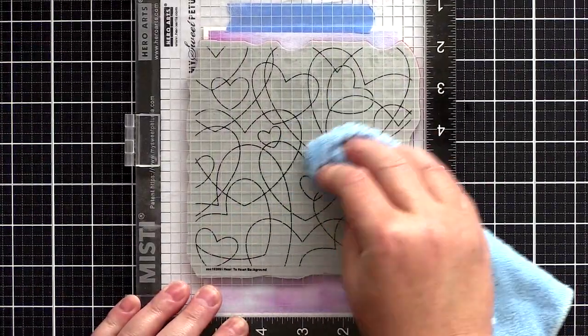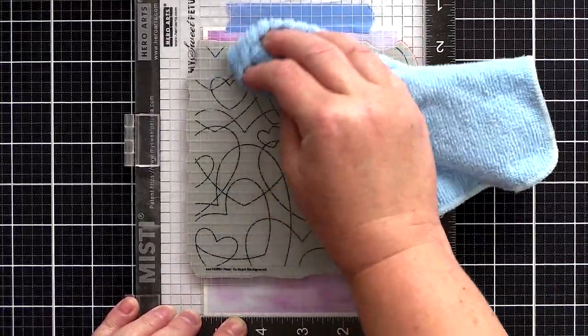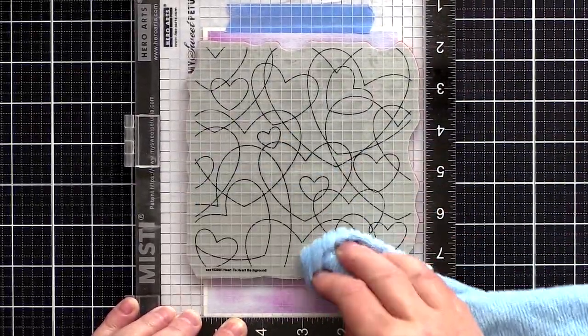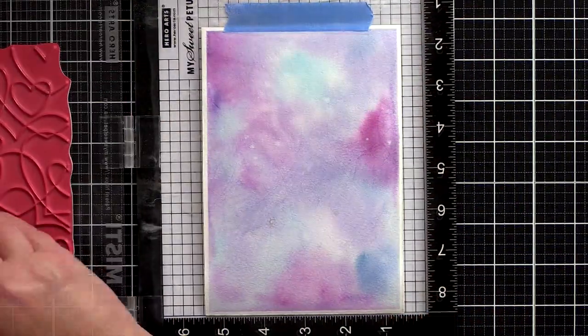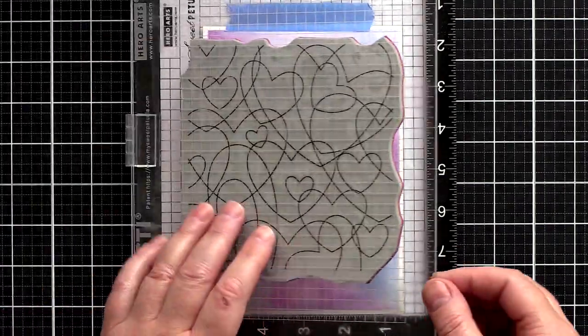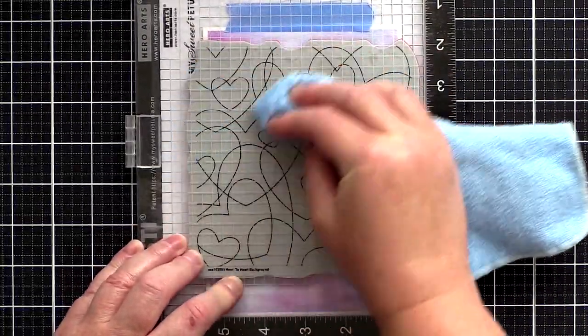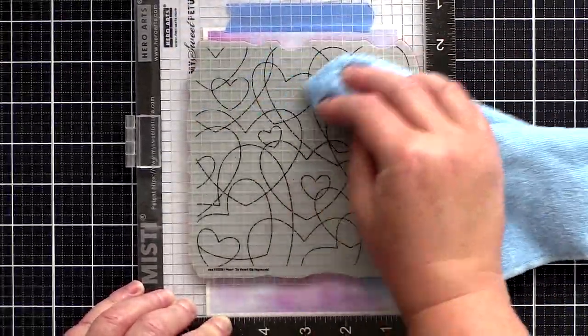By heat embossing after watercoloring you don't have that problem. Your beautiful white embossed lines will stay pristine and white. So going back to what I'm doing here, I placed the heart to heart background stamp in the MISTI along with the watercolored panel. I kept the paper in place with masking tape as I'm going to stamp this multiple times to get a good impression on the watercolor card.